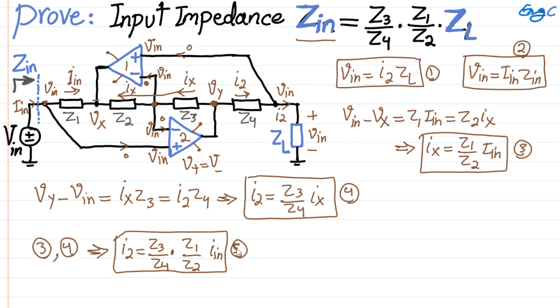And now, finally, if we plug in from 2 and 1 into number 5, so using equation 1 and 2, what we get is Vin divided by Zl, that's substitution for I2, equal to Z3 over Z4 times Z1 divided by Z2. Iin also substituted from equation 2, so it's Vin divided by Zin, and now Vin cancel out,